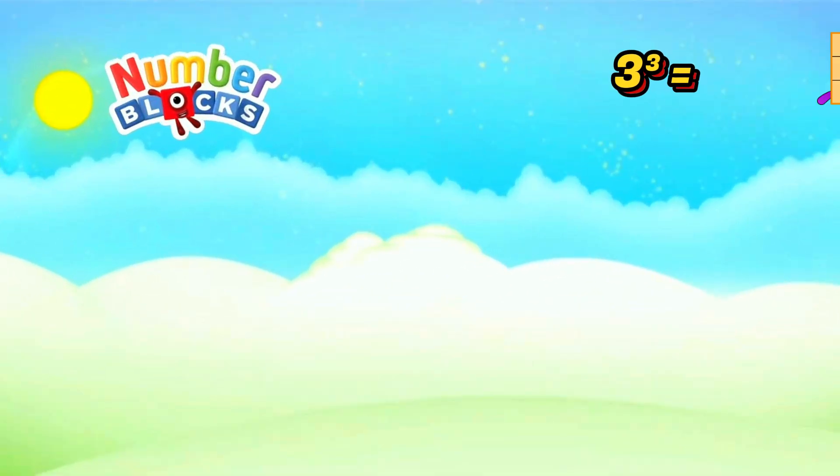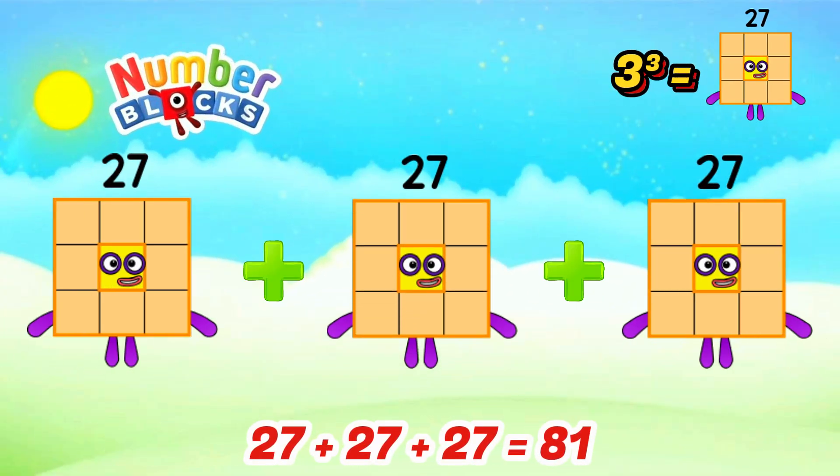Cube of 3 is 27. When we add 27 three times, the answer is 81. Amazing!